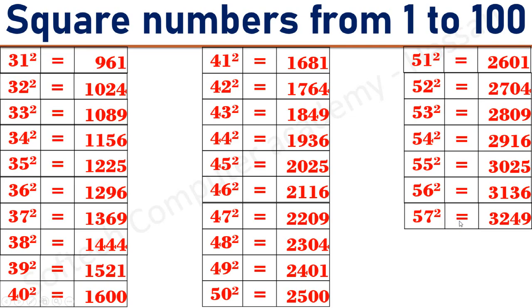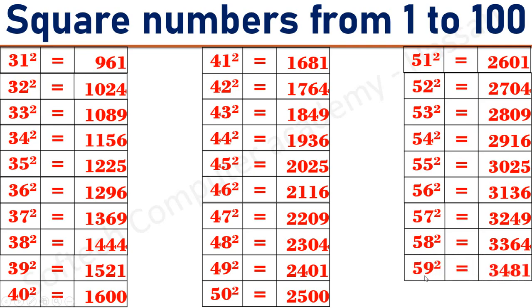57 square equals 3249. 58 square equals 3334. 59 square equals 3481. 60 square equals 3600.